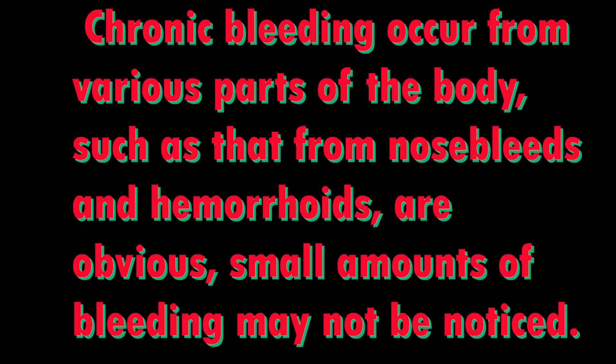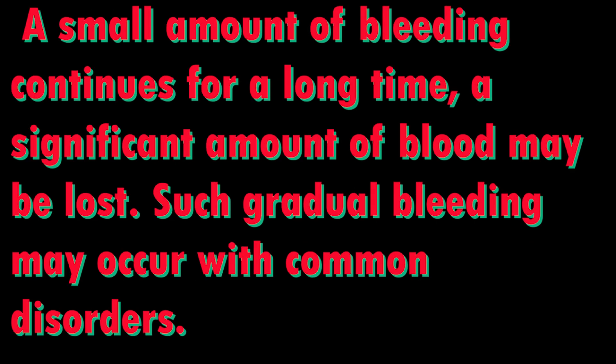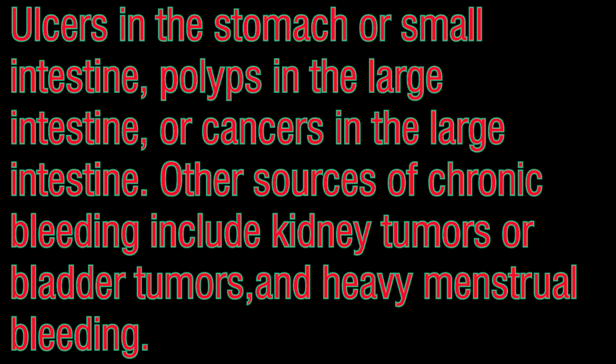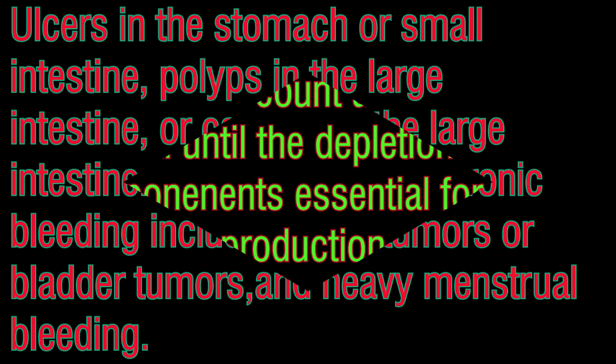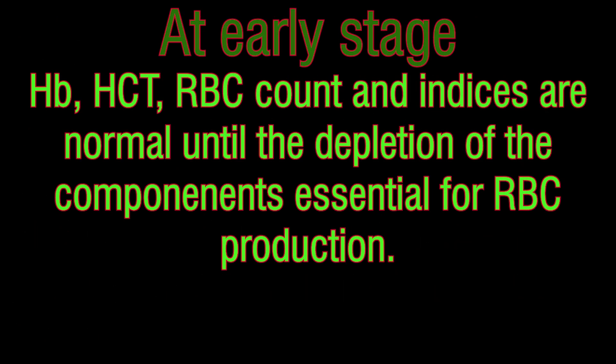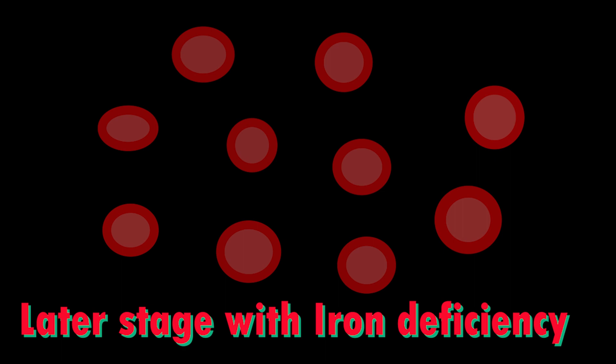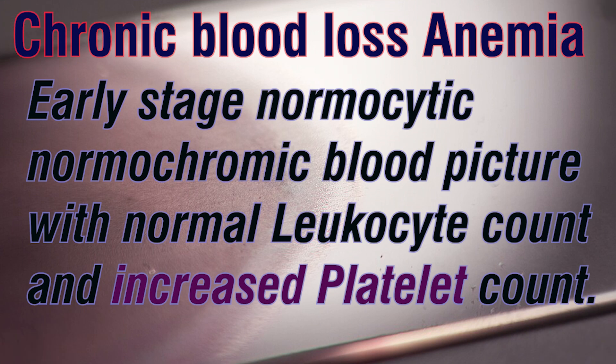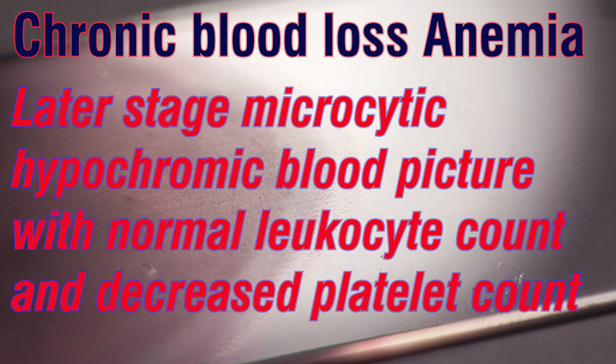Chronic blood loss anemia: bladder tumors, cancer or polyps in the GI tract, heavy menstrual bleeding, kidney tumors, and ulcers in the stomach or small intestine can cause chronic blood loss. A noticeable anemia does not usually develop until after storage iron is depleted. At first, the anemia is normochromic and normocytic. Gradually, the chronic bleeding results in iron deficiency and newly formed cells are morphologically hypochromic and microcytic. The WBC count is normal or slightly decreased. Platelets are commonly increased; only later, in severe iron deficiency, they are likely to be decreased.